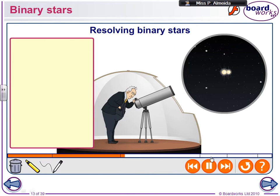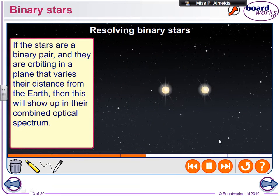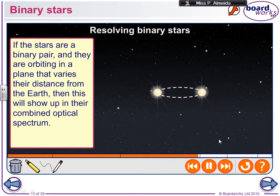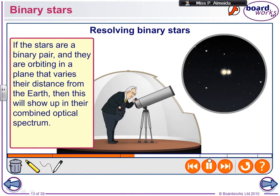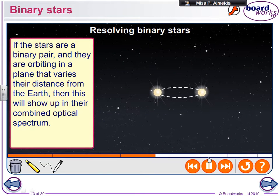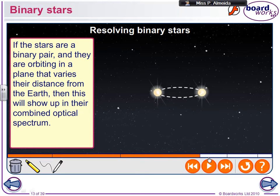Binary stars behave the way you can see in the animation — they go around each other and around their own center of mass. Depending on the mass of each of the stars, they are going to have a center of mass and orbit around it. In this animation they appear to be stars with equal masses, but this works with any stars — they don't have to have equal masses. It's just that the position of the center of mass may change.